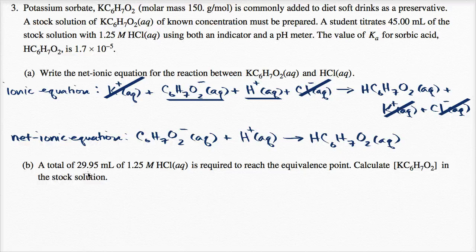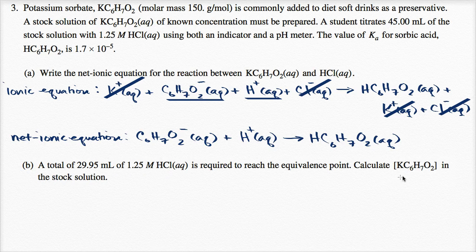A total of 29.95 milliliters of 1.25 molar hydrochloric acid is required to reach the equivalence point. Calculate the concentration of potassium sorbate — when we put the brackets, they're talking about concentration — in the stock solution.